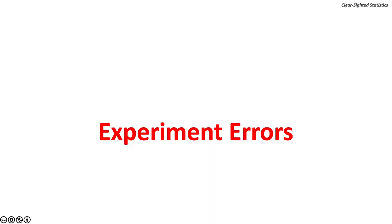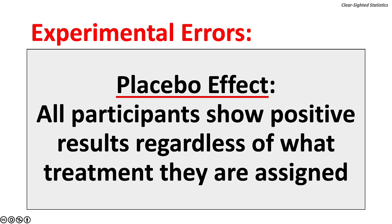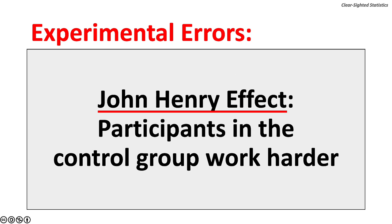There are also three important experimental errors — reactive effects that happen when respondents know they are participating in a study. The Hawthorne effect occurs when participants do not behave normally because they know they are in a study. A placebo effect occurs when all participants show positive results regardless of what treatment they are assigned. A John Henry effect occurs when participants in a control group work harder because they know they are participating in a study.